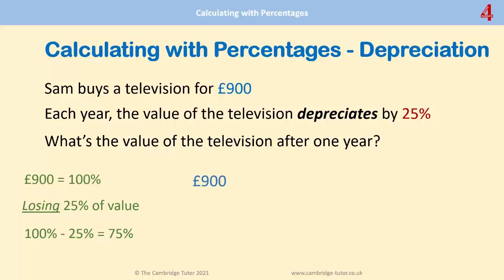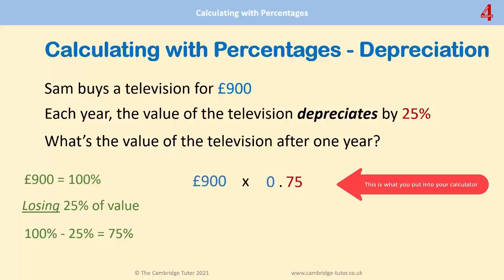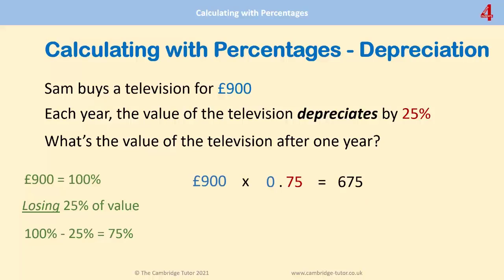When we're multiplying this, we have 900 multiplied by... Because this is going down in value, we don't include that 1 — that 100%. So it's multiplied by zero point, then the 75% that's left after we've taken the 25% away from the 100%. 900 times 0.75. And that means that at the end of the first year, the television is worth £675.